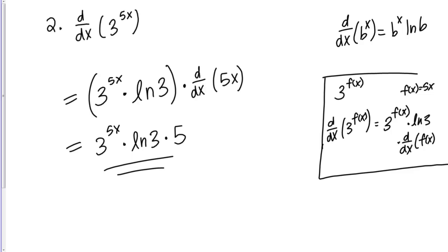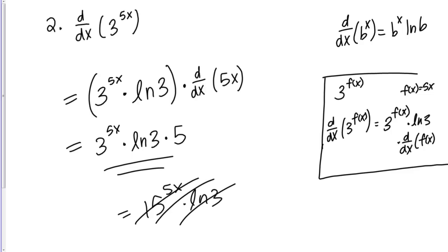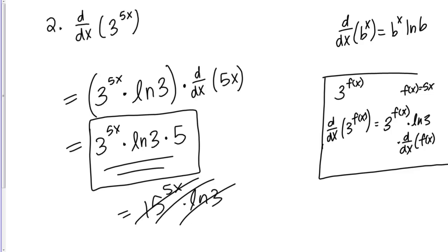I want to caution you about a mistake that's easy to make here. You might be tempted to write this as 15 to the 5X times ln 3, but that's wrong. The 5 does not have an exponent — the 3 does — so we can't combine them through multiplication. You would just want to leave this in its current form; you can write the factors in any order, but you cannot combine that 5 and the 3 by multiplication.